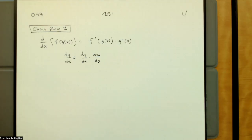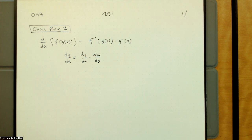Yesterday we introduced the concept of the chain rule — the derivative of a composition of functions. The derivative of f(g(x)) is f'(g(x)) times g'(x). We take the derivative of f with respect to g, that is, take the derivative of f leaving g(x) as it is, and then we multiply by the derivative of g(x).